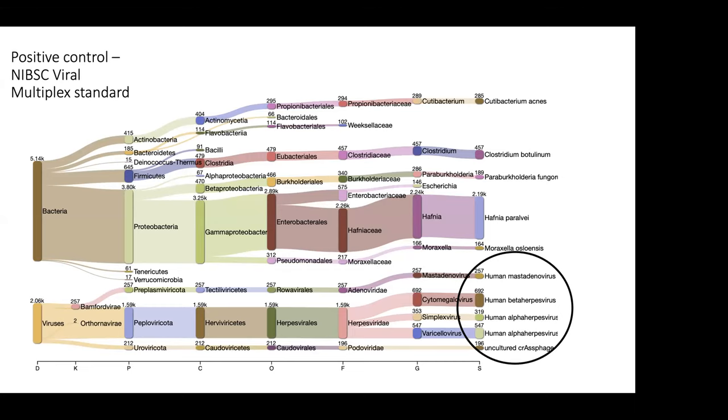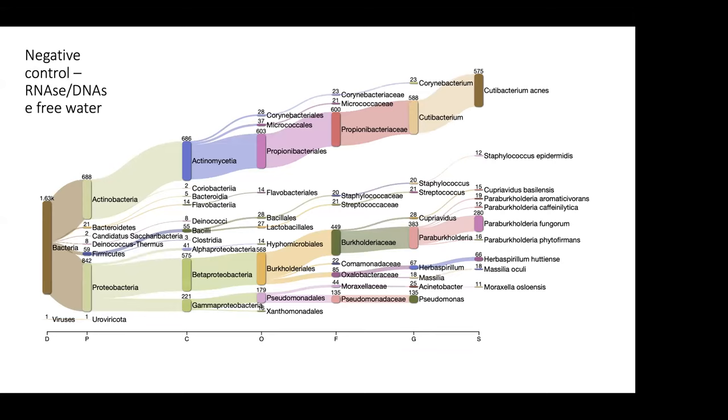This is what a data output will most likely look like. This is the positive control that we ran. Very importantly, with any molecular test you need a positive control because you need to know that you're putting in stuff, can you get it back out. As you can see here, this positive control had a variety of viruses: human mass adenovirus, human beta herpes virus, human alpha herpes virus, so HSV, human alpha herpes virus varicella zoster, as well as a whole bunch of other stuff which was most likely in that positive control but was not necessarily what we were looking for. But I'll talk more about that later.